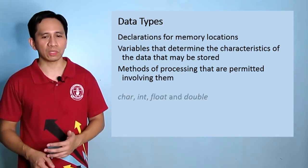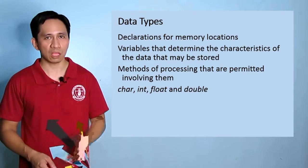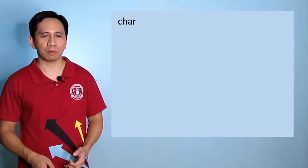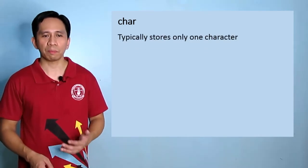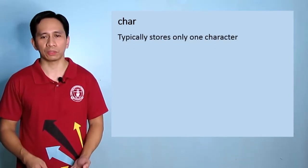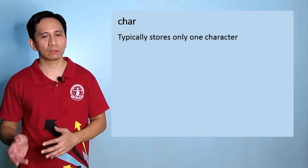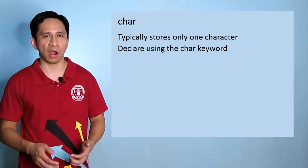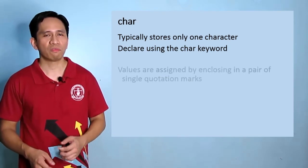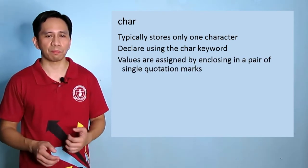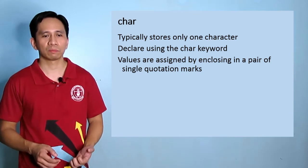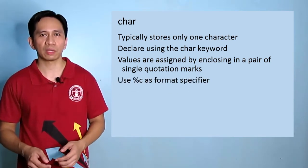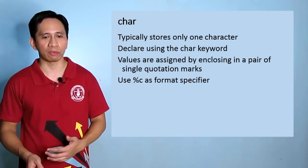Basic data types in C are char, int, float, and double. The first data type is char. It typically stores only one character - it can be an alphabet, number, or special character. We declare it using the char keyword. Values are assigned by enclosing them in a pair of single quotation marks. We use %c as format specifier when we use it for printf and scanf.